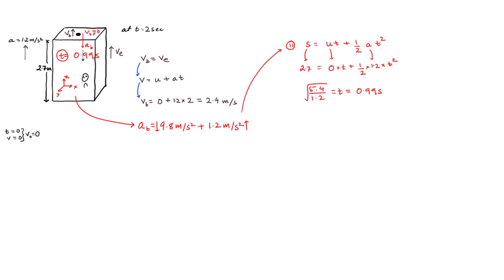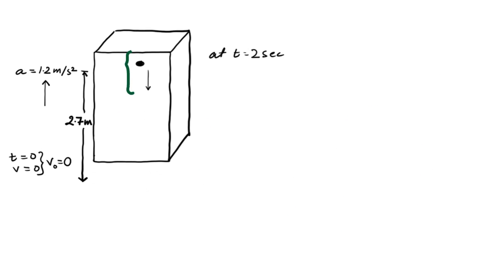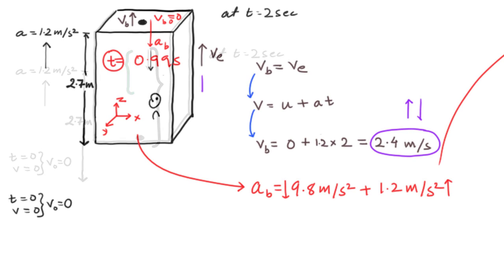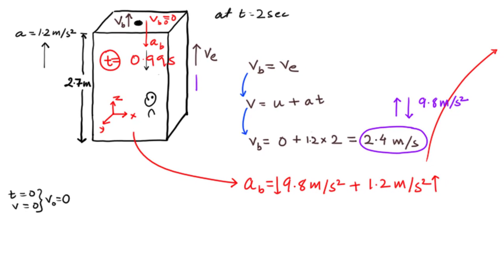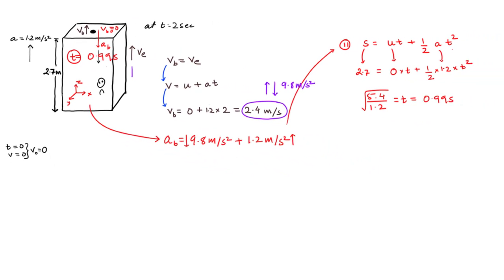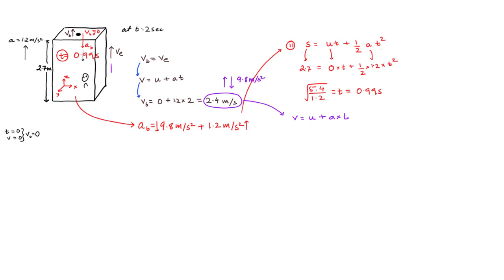Keep in mind the bolt had an initial velocity of 2.4 meters per second when it started falling, since it was accelerating with the elevator. The moment it starts falling, the elevator continues accelerating upward at 1.2 m/s², but the bolt accelerates under gravity at −9.8 m/s². It will take some time to reach zero upward velocity, and then fall freely. We calculate that time using v = u + at and subtract it from the total time to get the free fall time.